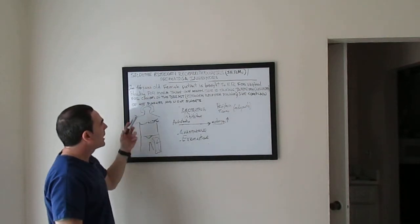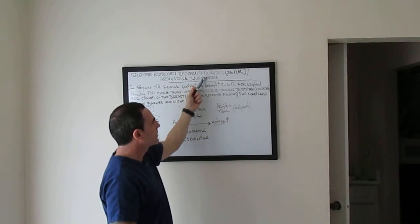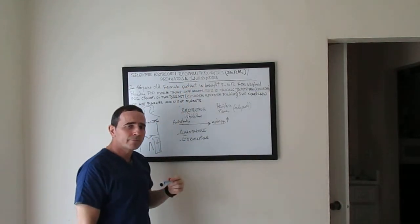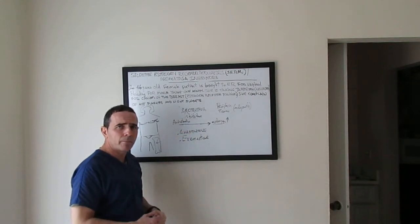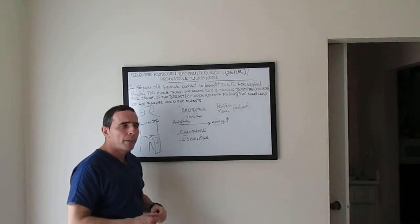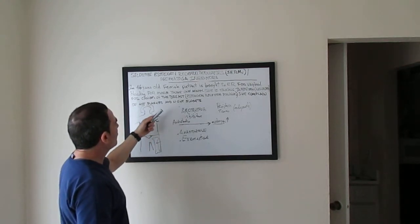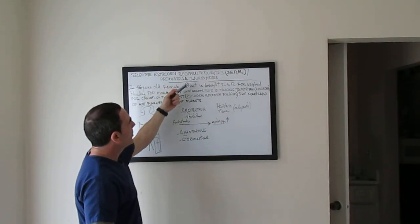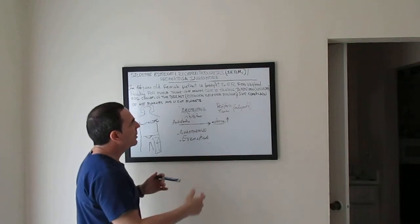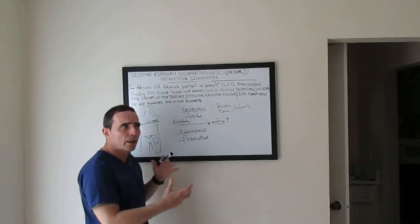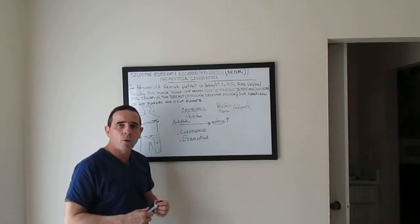In postmenopausal women, the doctor uses aromatase inhibitors more frequently, as they have more benefits than tamoxifen. In large studies, sometimes the doctor uses tamoxifen first — a selective estrogen receptor modulator — for five years, and after that, five more years of aromatase inhibitors. Combining these two drugs provides more benefits for patients.